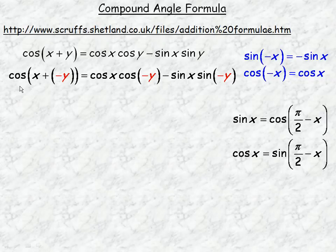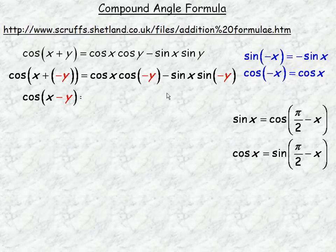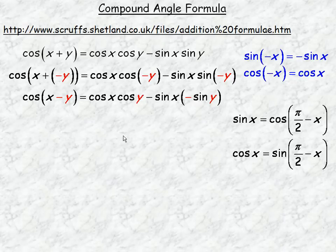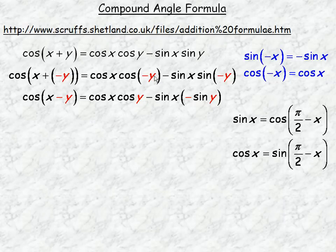We'll find cos(x minus y) next. We substitute negative y in place of y. One of the properties of cosine is that the cosine of a negative rotation is the same as the cosine of the positive rotation, so cosine of negative y equals cos y.